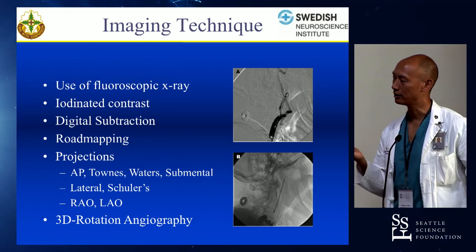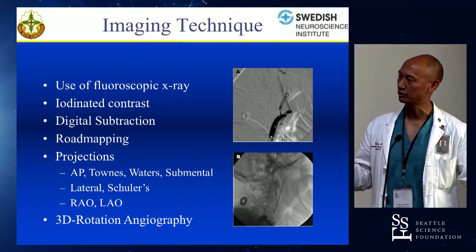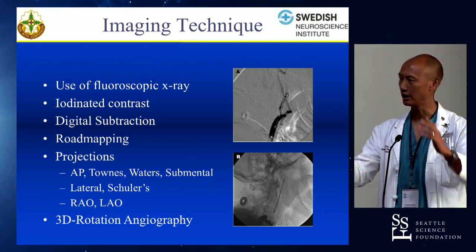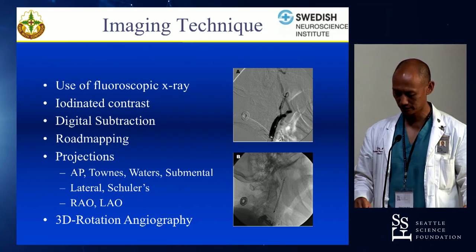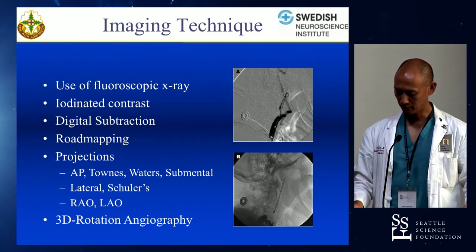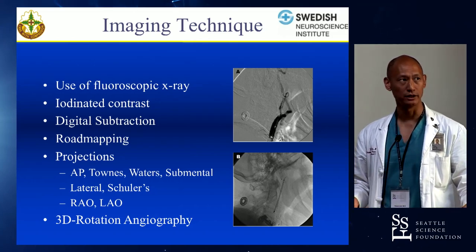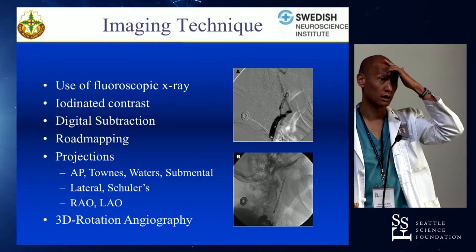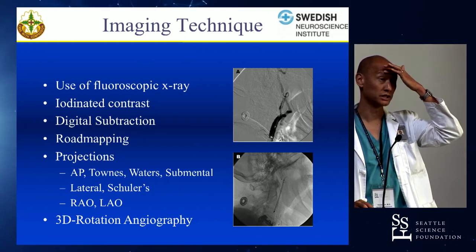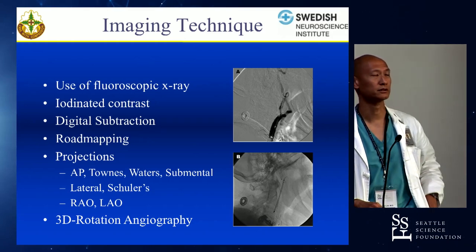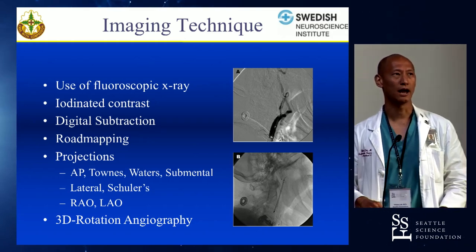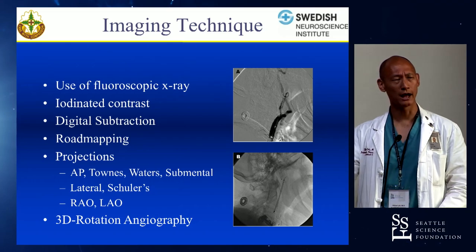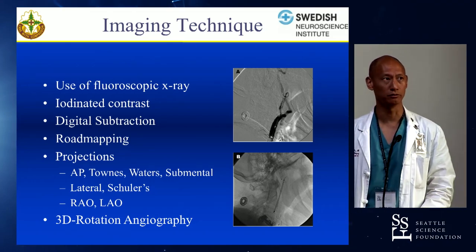RAO and LAO — right anterior oblique and left anterior oblique — are usually done with the AP tube. We also have the advantage of 3D rotational angiography, which is a very impressive acquisition where you'll actually do a scout image.